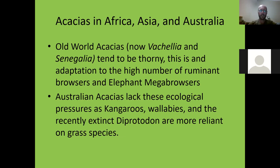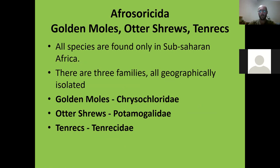Even the recently extinct Diprotodon — a two-and-a-half-ton wombat — was more reliant on grass species. Kangaroos and wallabies tend to focus on grasses too. So moving on to the first group of Afroinsectiphilia: the Afrosoricida, which include golden moles, otter shrews, and tenrecs. All species are found only in sub-Saharan Africa and Madagascar.